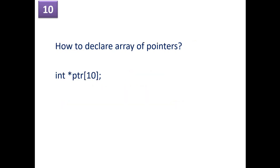How to declare an array of pointers? If you write 'int *ptr[10]', then ptr becomes an array of pointers. Here we have 10 pointers, ptr[0] to ptr[9], and we can store 10 memory locations into these pointers. This is called an array of pointers.